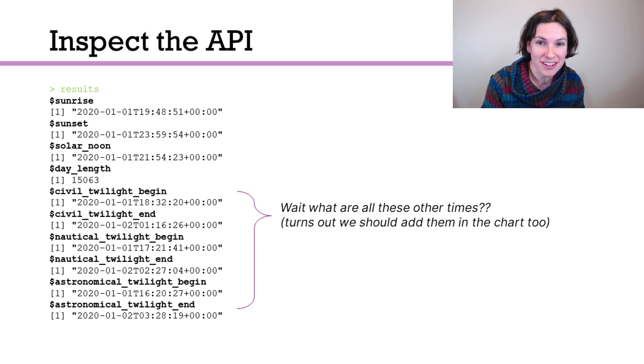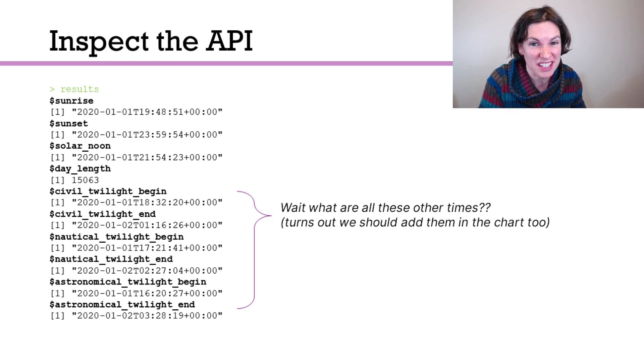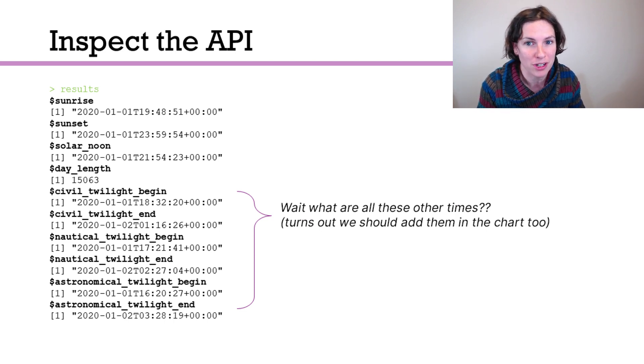There are a bunch of other things like nautical twilight, and when you dig into this and Google it, it turns out those are probably good things to put in the chart too, making this more complicated. That makes the data slightly messier, but this is all fine. This is all doable.